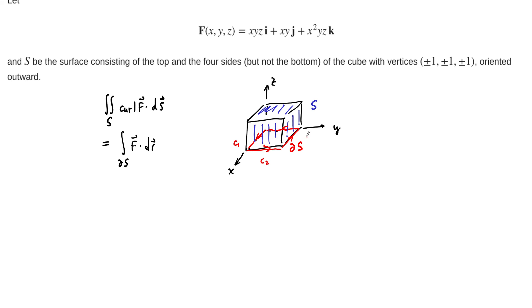So we have C1, C2, C3, C4, and we need to deal with each one of those individually. We're going to end up with integrals that just go along each line segment, and then we have to add them up.